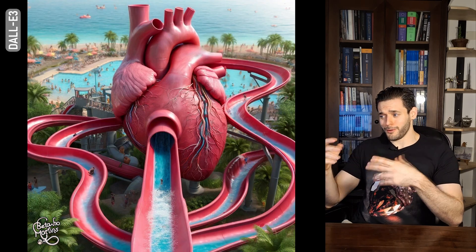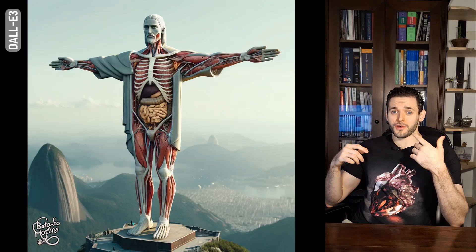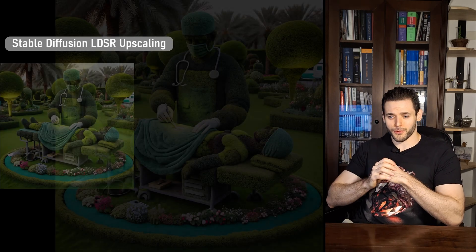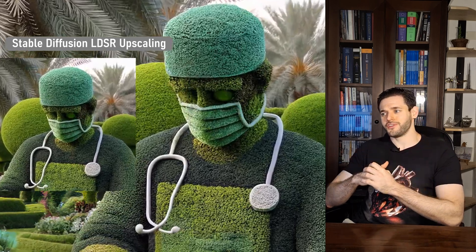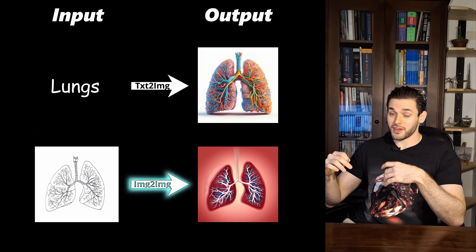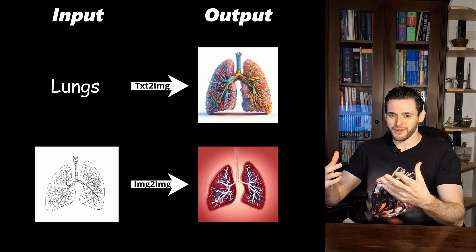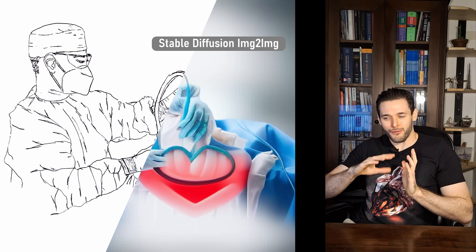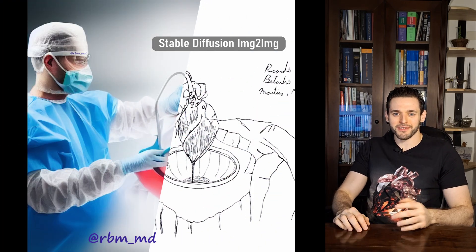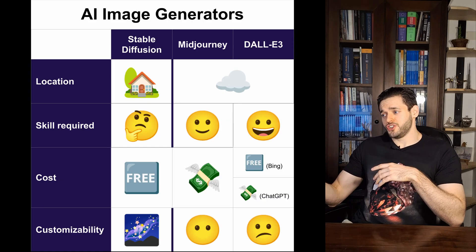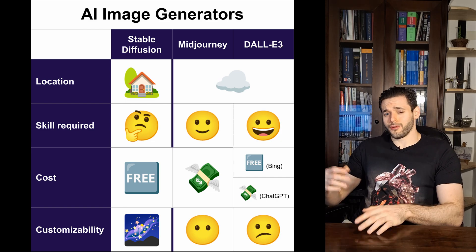Usually nowadays I mostly use DALL-E 3, because it is so easy and fast. And if I need to do some finer detail — to in-paint something, or when I upscale using Latent Diffusion Super Resolution (LDSR) — then I use Stable Diffusion. Stable Diffusion is also the only one that can do image-to-image, which can be really important if you have something very specific in mind. If you want to create an image of yourself in some kind of anatomical context, then Stable Diffusion is most likely your best option. I don't use MidJourney because it's paid and not as flexible as Stable Diffusion.